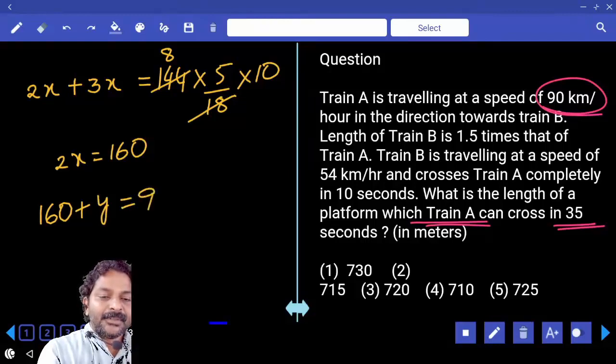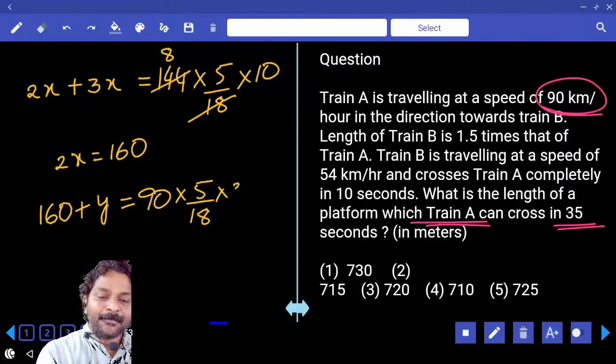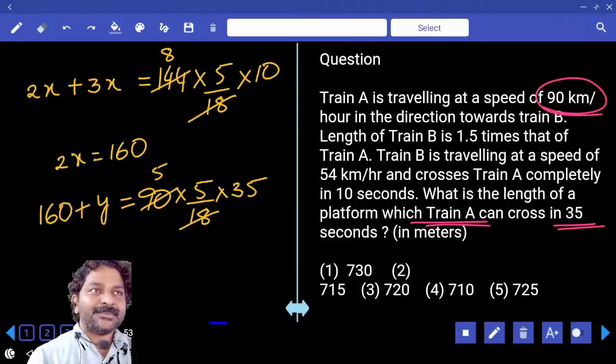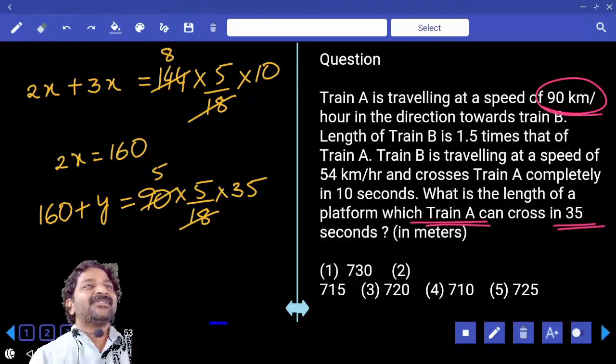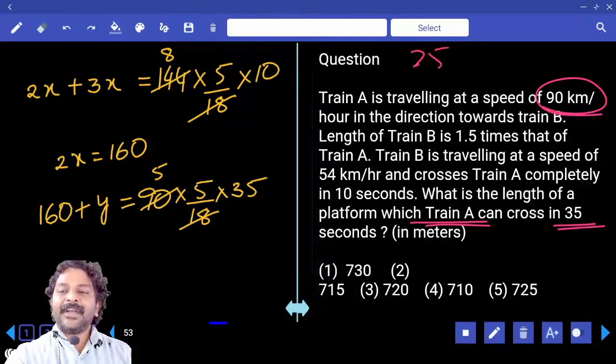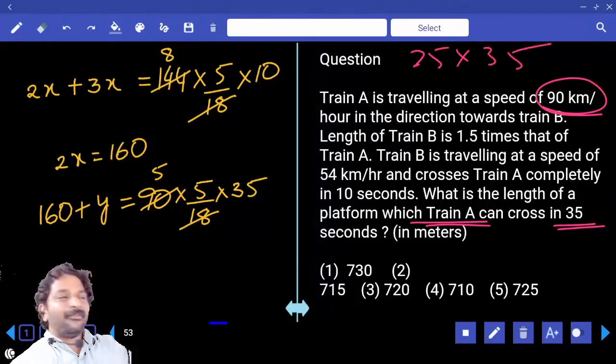Speed 90 kilometer per hour convert into meter per second and time taken 35. 18 into 5, 25. 35 times, 25 into 35 one fellow can be written as 30 minus 5, the other fellow can be written as 30 plus 5.